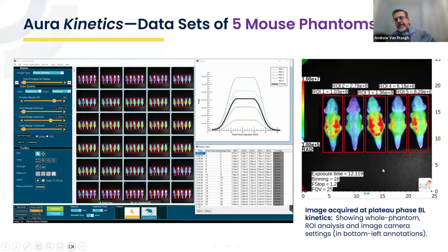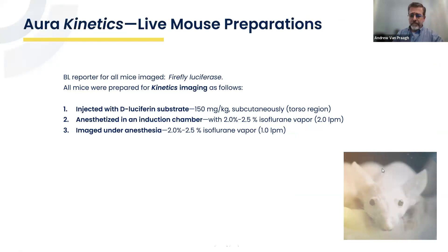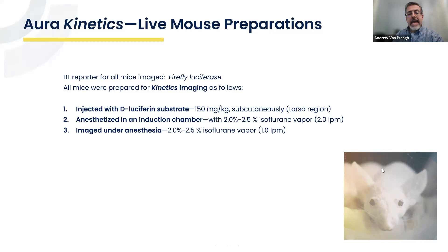For the upcoming demonstrations of the kinetic feature in live mouse model systems, here are the common protocols used in all cases. Firefly luciferase was the bioluminescence reporter. Mice were prepared for kinetic imaging following sequential animal handling: injection with D-luciferin substrate subcutaneously at 150 mg/kg, then anesthetized using two to two-and-a-half percent isoflurane vapor in an induction chamber, transferred to the LOGO-X or AMI-HTX imagers, and maintained in an anesthetic state through the mouse manifold.